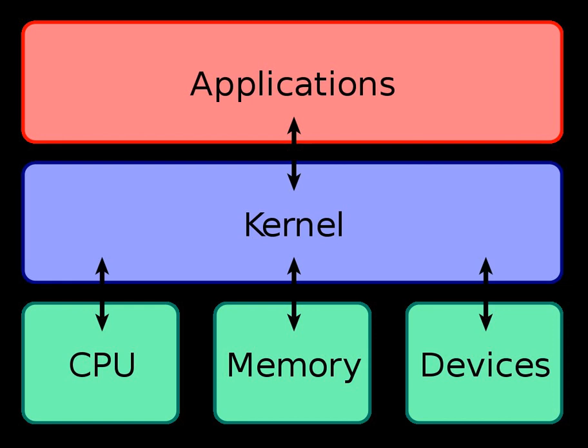In 1969, the RC-4000 multiprogramming system introduced the system design philosophy of a small nucleus upon which operating systems for different purposes could be built in an orderly manner — what would be called the microkernel approach.